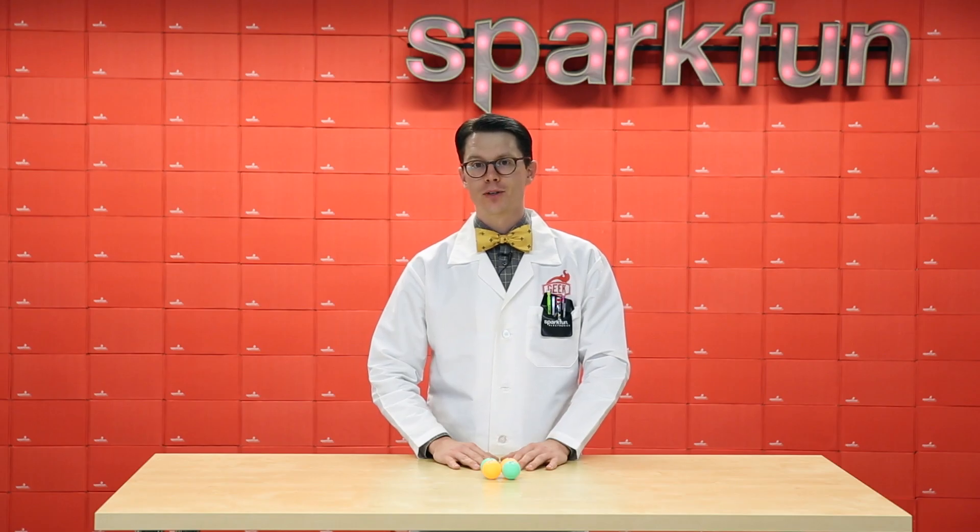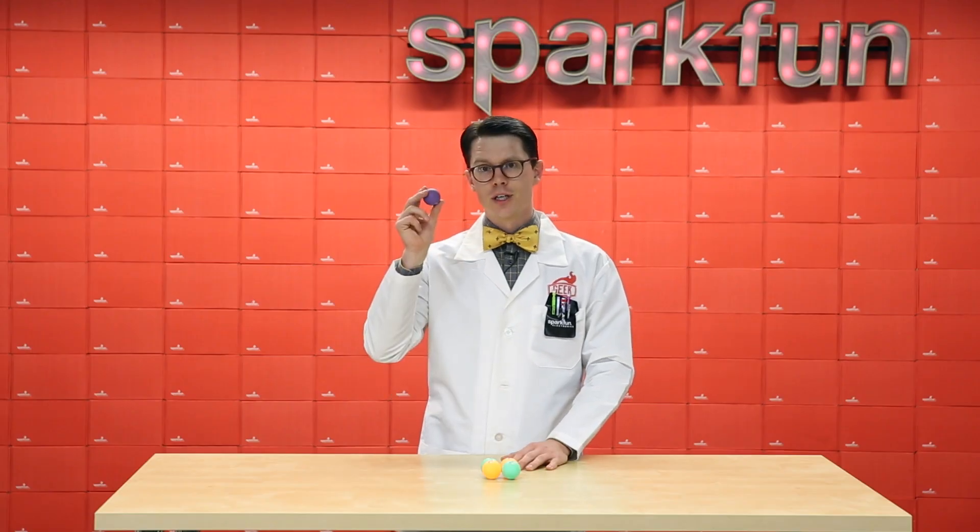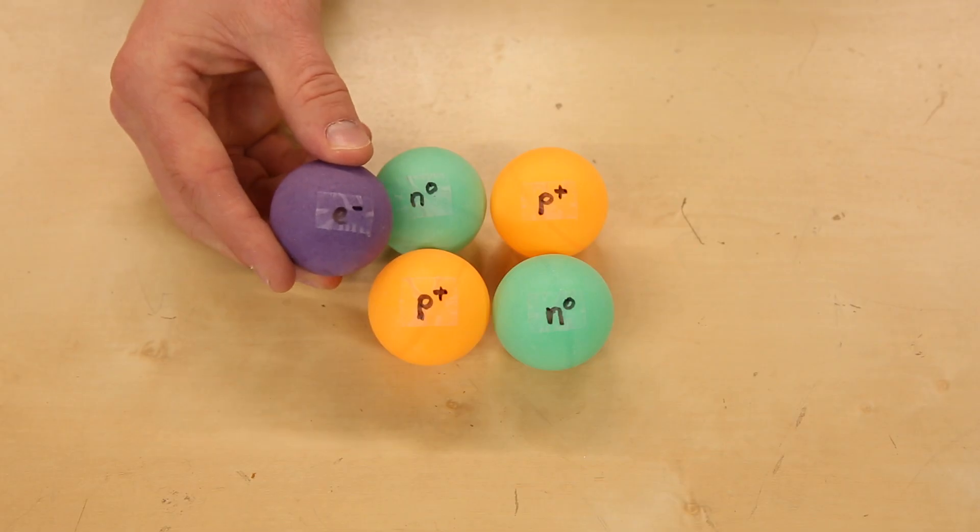Atoms are made up of three basic particles. That is, protons, which have a positive electric charge, neutrons, which have no electric charge, and electrons, which have a negative electric charge.